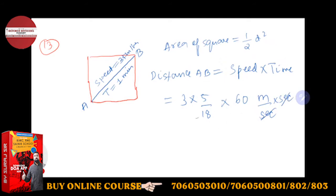So speed is how much? 3 km, but we have to convert it into meter per second. 3s are 18, 6, 10s are, and 3, 3 cancel. So the distance is 15 meter. Okay, now what you have to find?